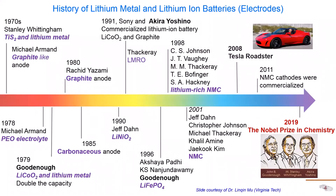My postdoc Linqin made this nice timeline on the development of lithium metal batteries and lithium-ion batteries, focusing specifically on the progress of the electrode materials. Everything started in the 1970s, and it took about 40 to 50 years until last year, when the pioneers in lithium-ion batteries were awarded the Nobel Prize in Chemistry in 2019. The names on this slide demonstrate the usefulness of different electrode materials we investigate today.